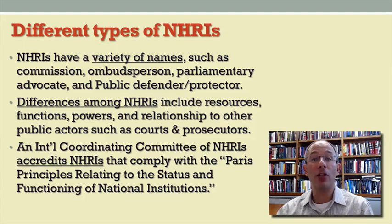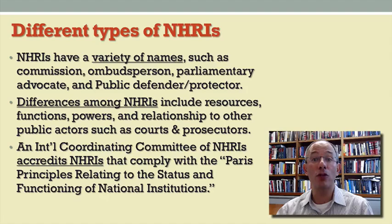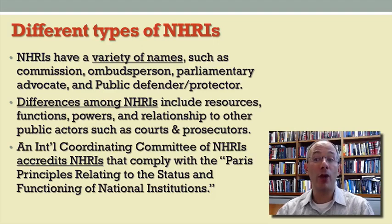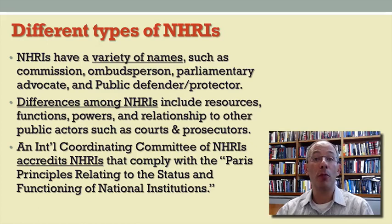Let's talk about some of the different kinds of NHRIs that exist. NHRIs go by a variety of names: commission, ombudsman, public defender or prosecutor, public advocate, and so forth. Some of the differences among NHRIs are with respect to the powers that they hold, the resources they have from the state, and their relationship to other public actors such as courts and prosecutors. So there's a lot of variation from country to country. In order to ensure that NHRIs meet at least a minimum international standard, there is an accreditation process by an international coordinating committee of NHRIs that determines whether NHRIs are fully, partly, or not compliant with international minimum standards. Those minimum standards are set forth, among other sources, in the Paris Principles relating to the status and functioning of national institutions to promote human rights.